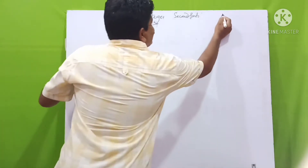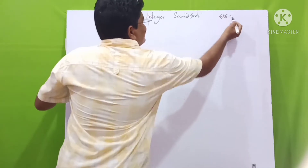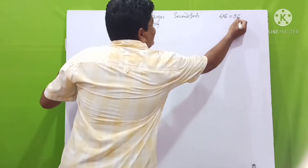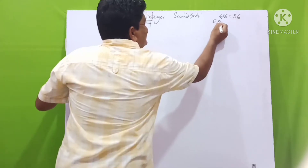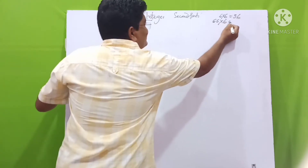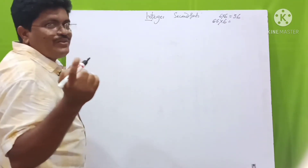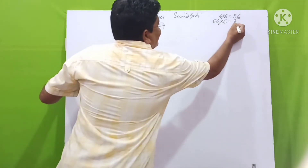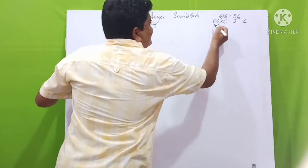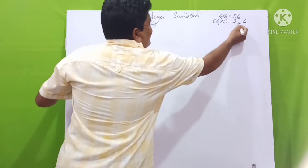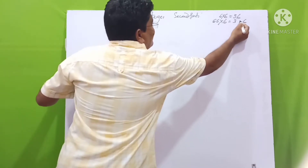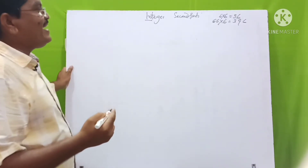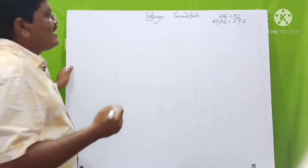You know 6 × 6 — everyone knows this — 6 × 6. That is 36. But double 6, 66 × 6, how much? Write like this: 6 × 6, and then totalling 3 and 6, we get 396.